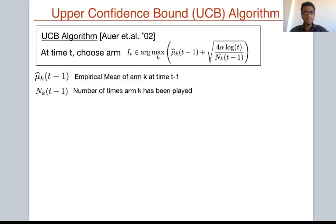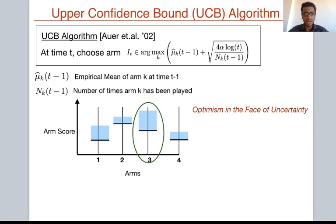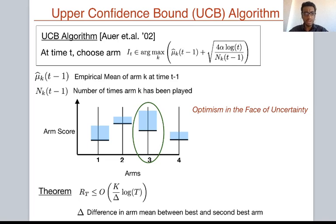Many algorithms have been proposed for the multi-armed bandit problem, and one particularly important to our work is the upper confidence bound or UCB algorithm, which first appeared in the paper of Auer et al. At each time t, the agent constructs an index for each of the K arms and chooses the arm with the highest index. The index of an arm is the sum of its empirical mean thus far and an extra exploration term that varies inversely proportional to the number of times the arm has been chosen. This trades off exploration and exploitation: the index is large if the empirical mean is large or if the arm has been played few times. The regret of this algorithm is order K/δ · log T, where δ is the difference in arm means between the best and second best arm.